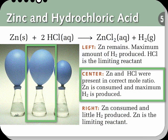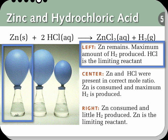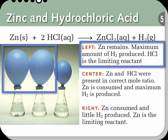The reaction in the center flask was set up so that zinc and hydrochloric acid were present in the correct mole ratio — two moles of hydrochloric acid for every one mole of zinc. The amount of hydrogen produced was one mole of hydrogen for every two moles of HCl, and one mole of hydrogen for every one mole of zinc. In the left-hand flask, there is some zinc remaining at the end, indicating that zinc was present in excess supply. This implies that hydrochloric acid is the limiting reactant. The size of the balloon is exactly the same in the left-hand flask as in the middle flask, confirming that hydrochloric acid is the limiting reactant.